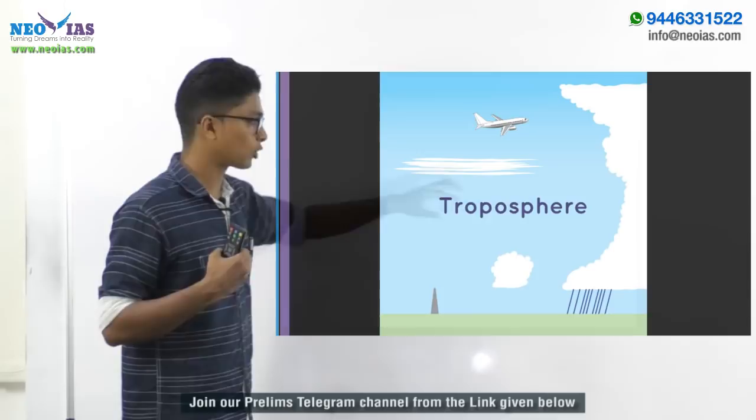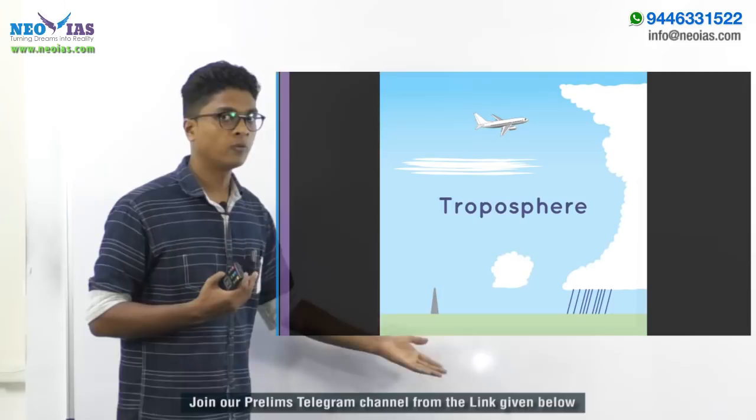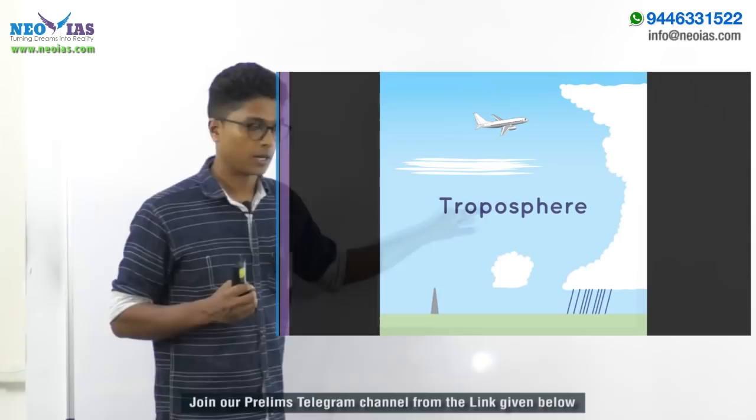Beyond the troposphere, we have calm conditions. We are not having any upward moving wind. With insolation, we have upward moving winds which create clouds, and this phenomenon is limited to the troposphere. Beyond the troposphere, we are not having upward moving wind.